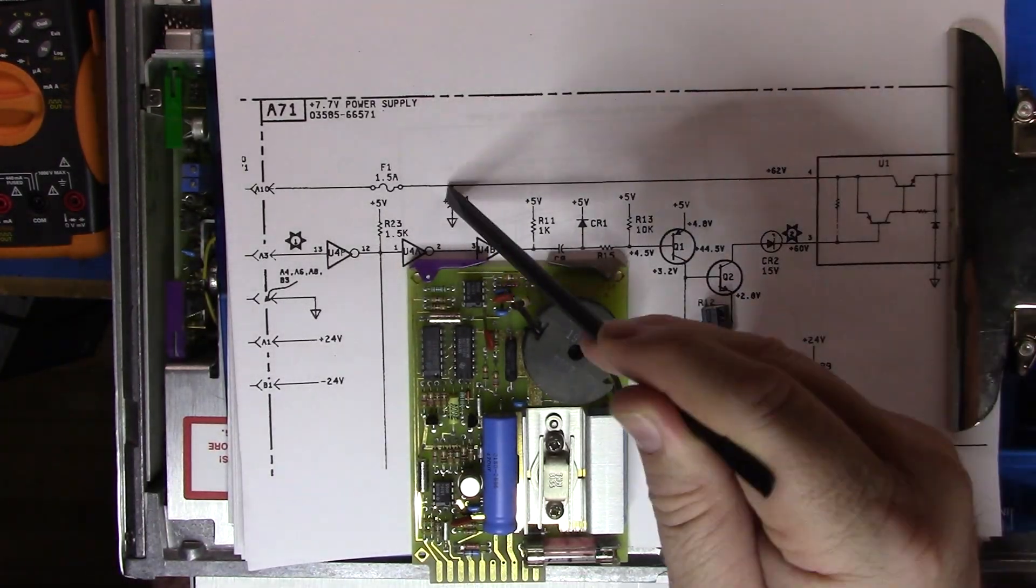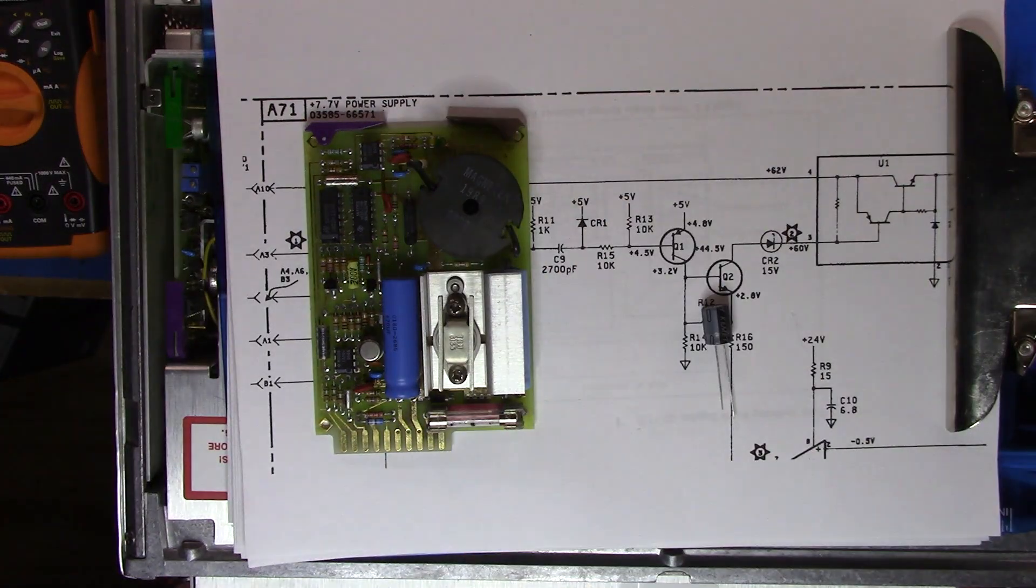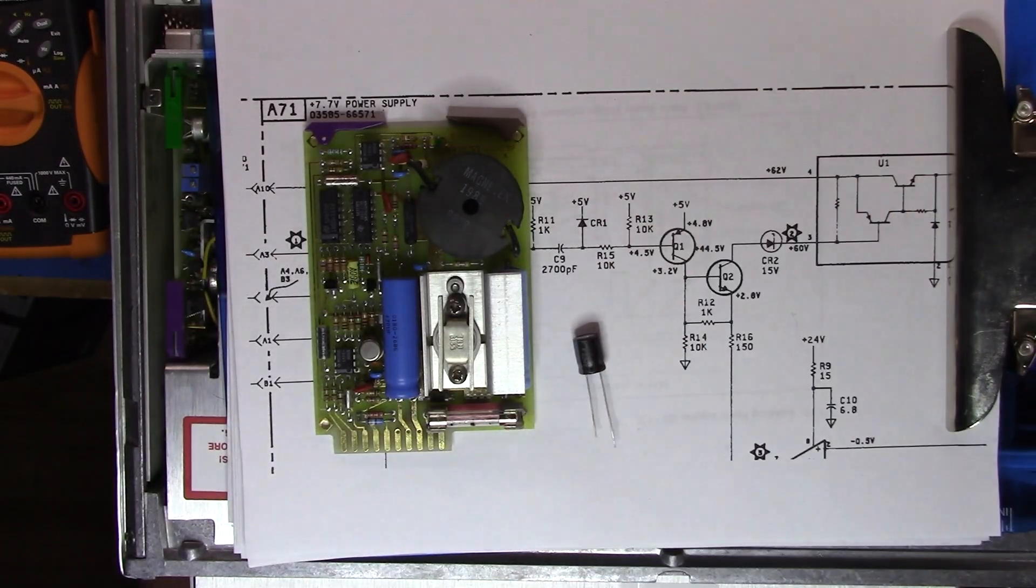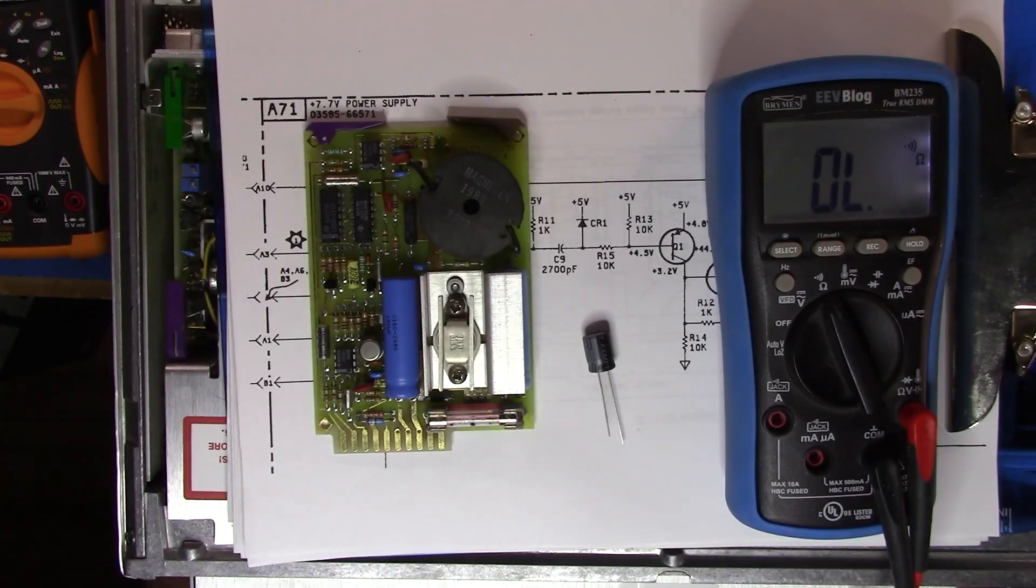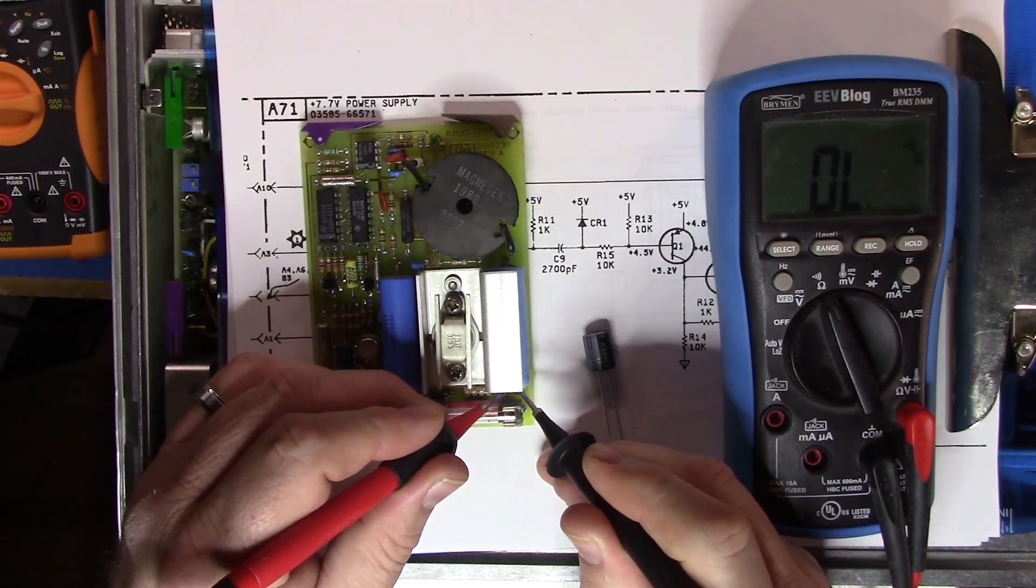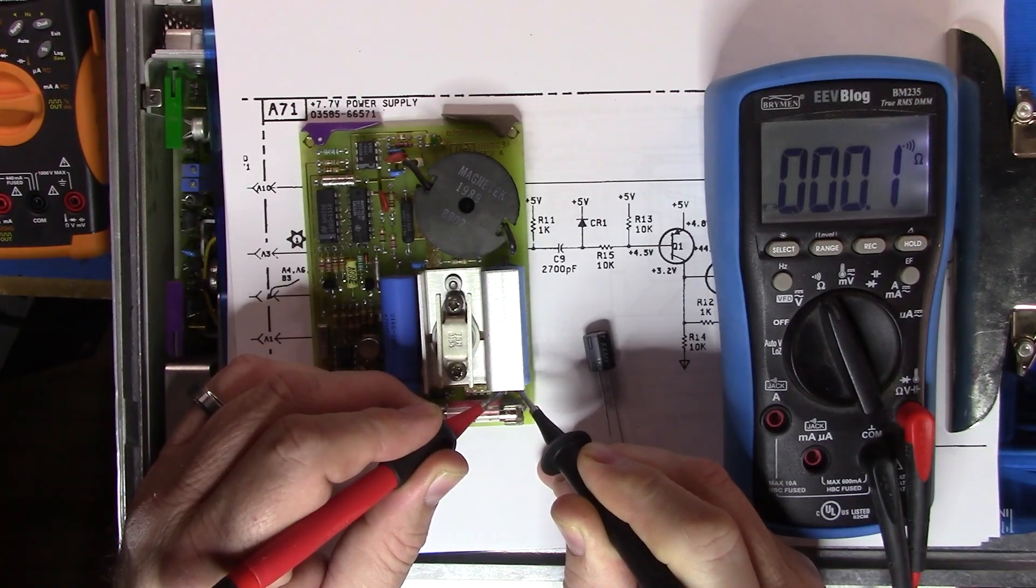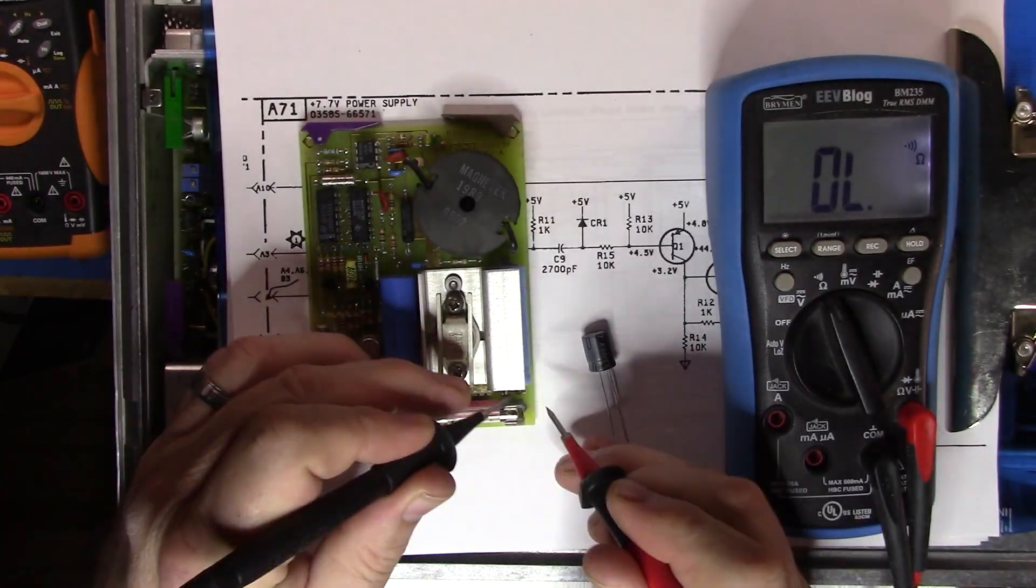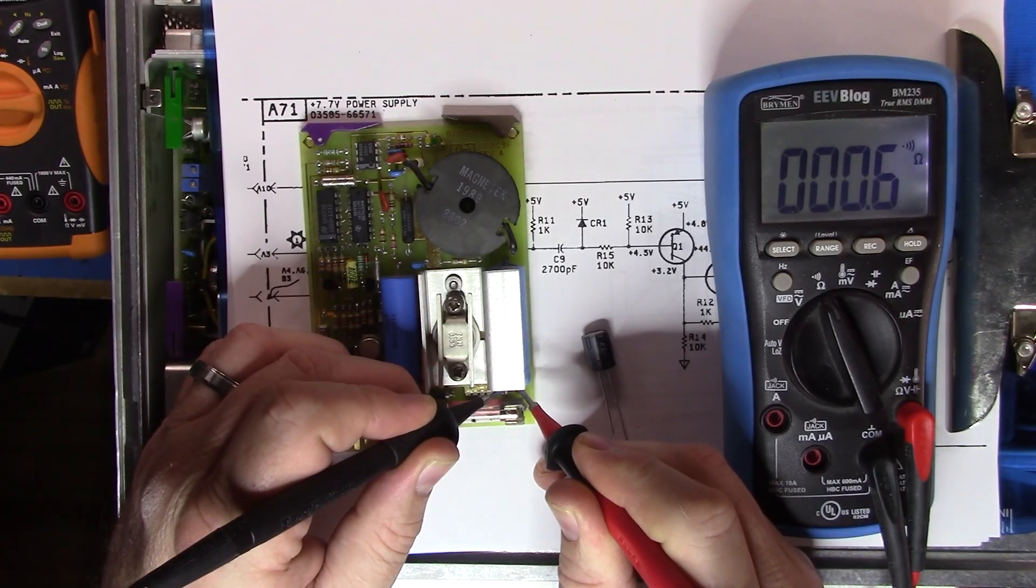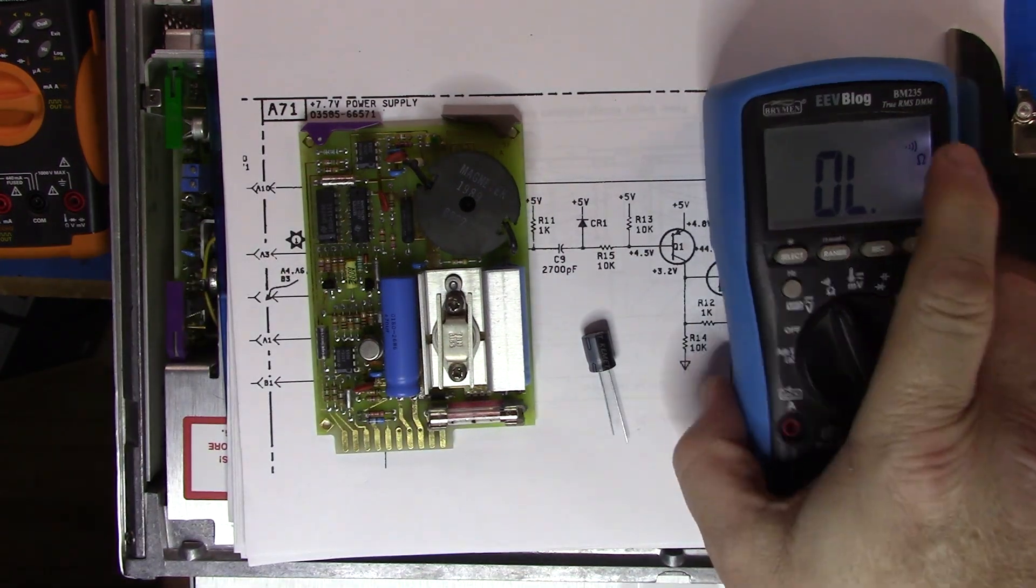So I thought oh well I wonder if there's a problem there and so when I tested this when I looked at this cap I discovered that it certainly wasn't good, wasn't healthy. So let's take a look at that and we can see here that, let me turn the backlight on. Alright so if we take a look we can see that it's basically a dead short and it's not charging up. So what should happen is you should get a charge curve as it charges up and eventually goes open circuit. So here we can see again that it's basically a dead short in both directions. So there's something wrong with that cap there.